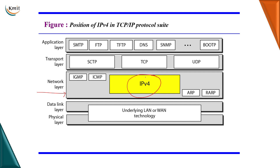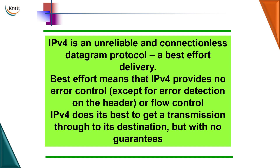IP is an unreliable connectionless protocol, basically called a best-effort delivery protocol, wherein it doesn't provide any flow control or error control features. The best it can do is make a transmission of a datagram from source to destination without any guarantee of reliability. This will be taken care of by the higher-layer protocols like TCP.